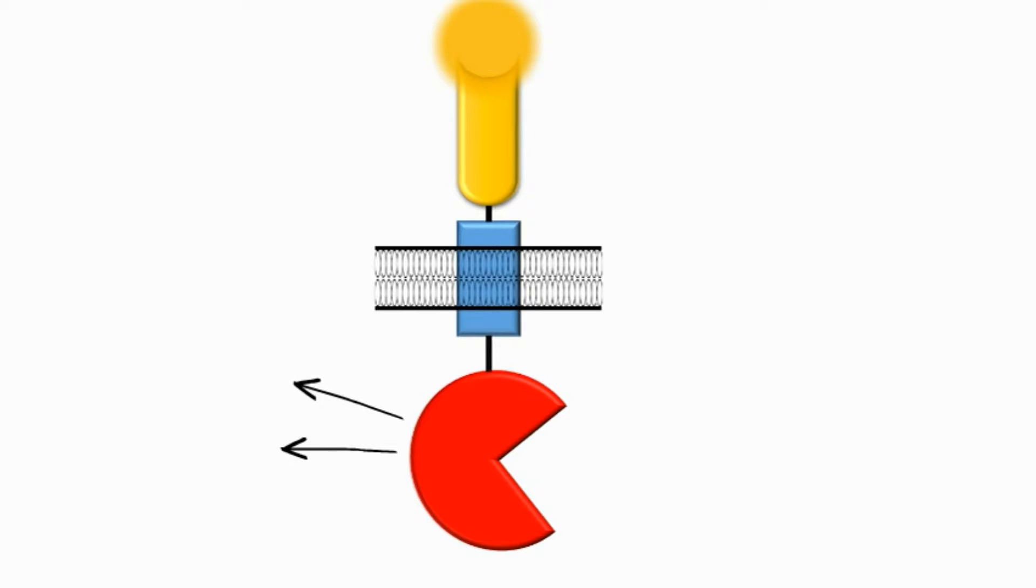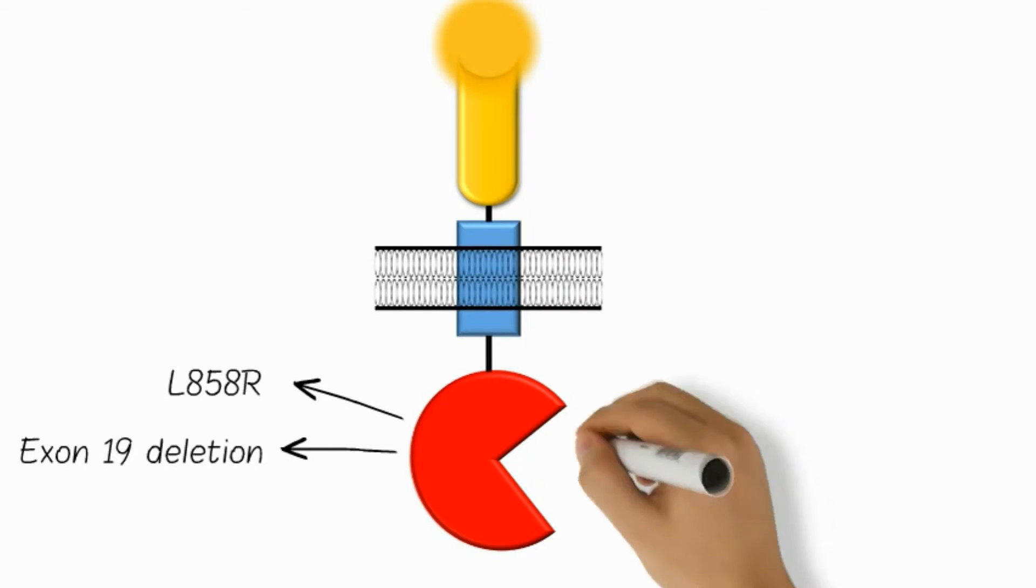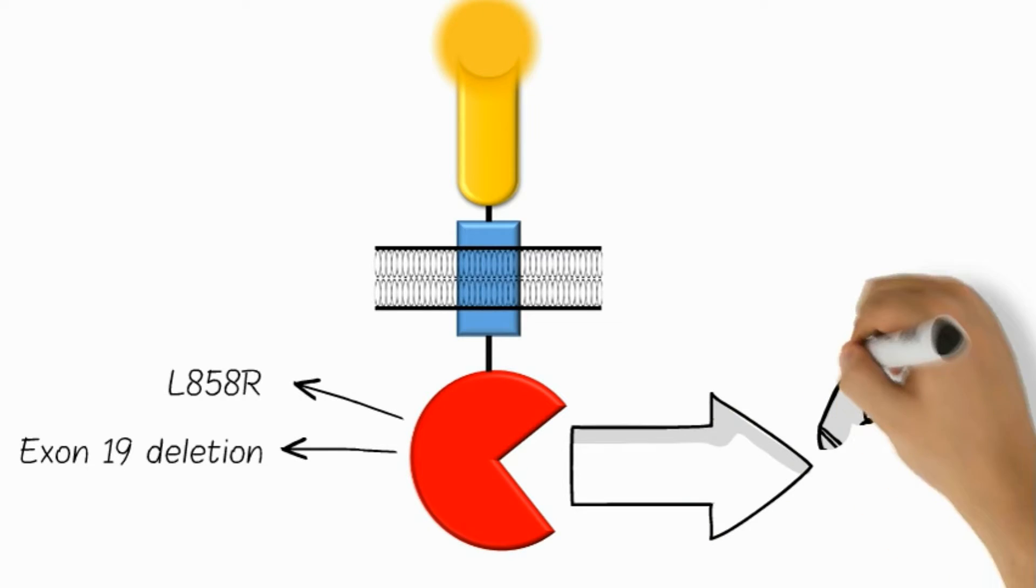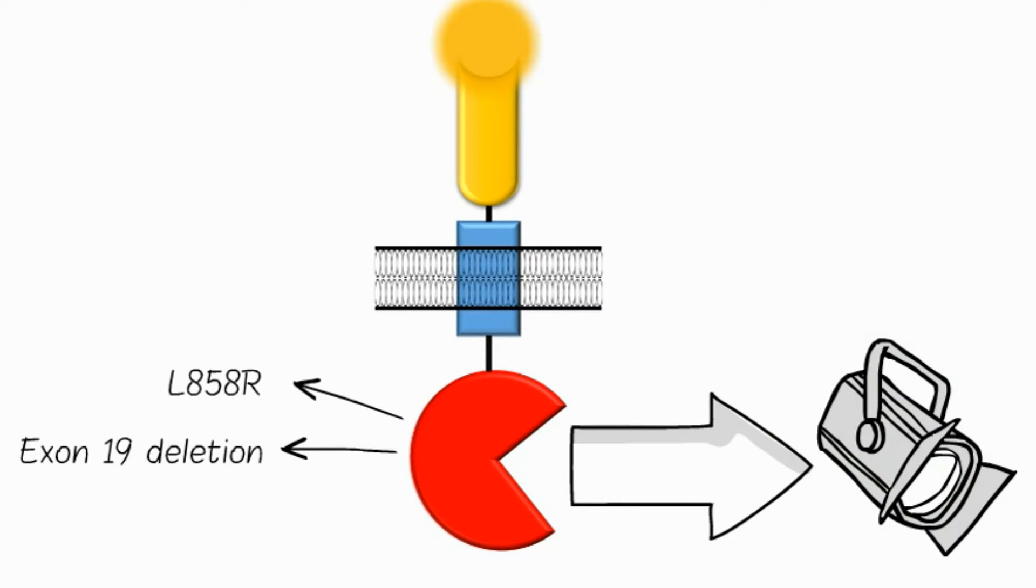If the kinase domain contains the L858R mutation or an exon 19 deletion, this downstream signaling is increased and an oncogenic transformation of the cell takes place.